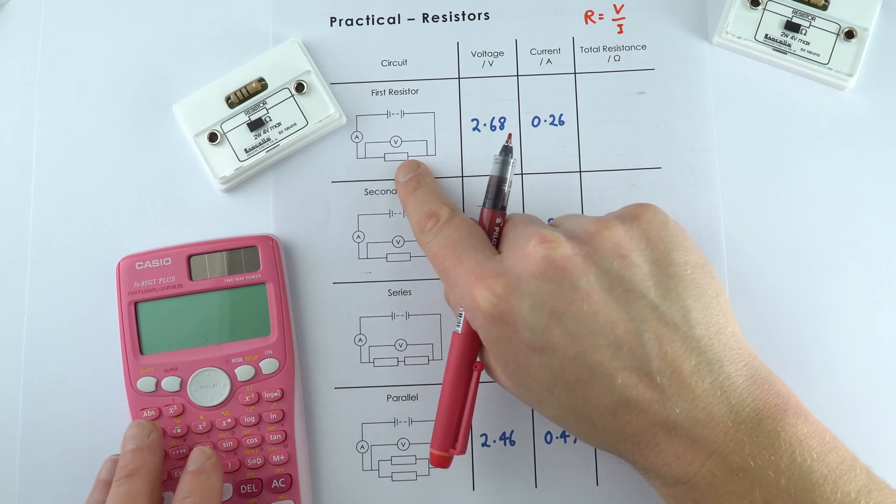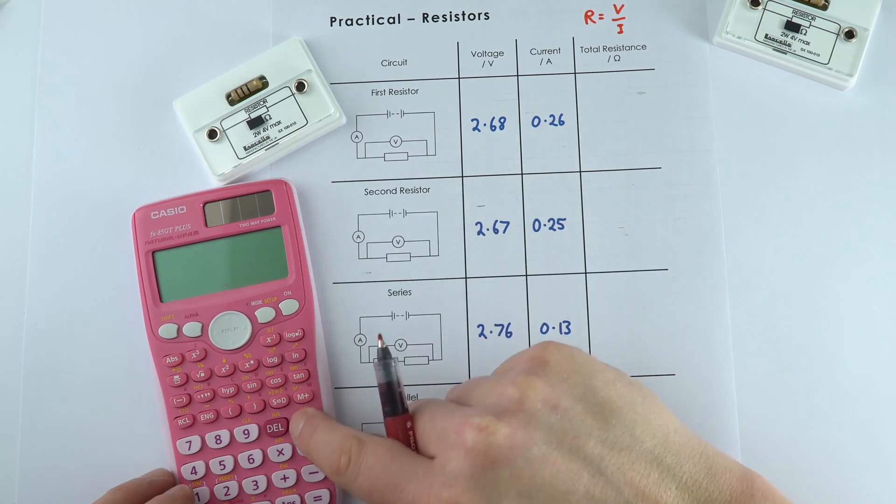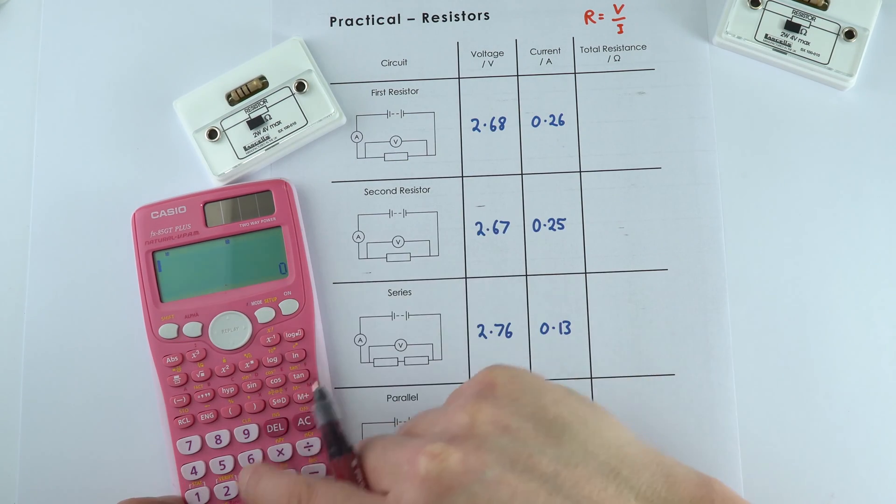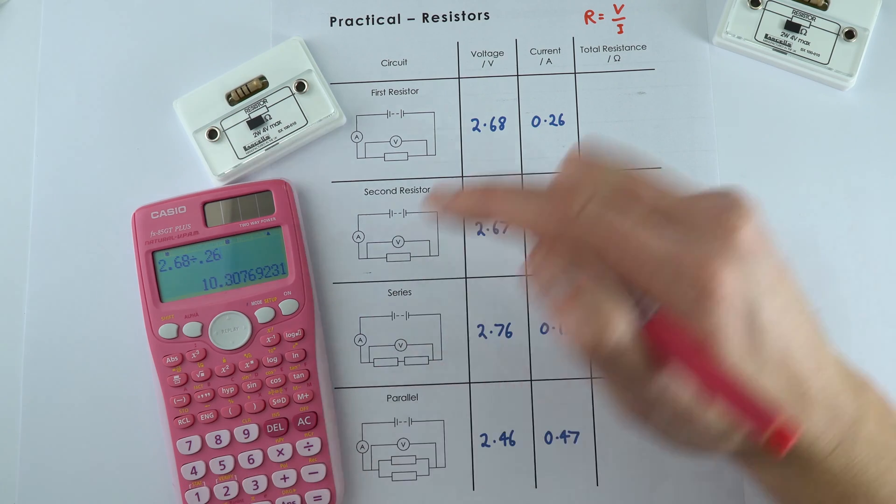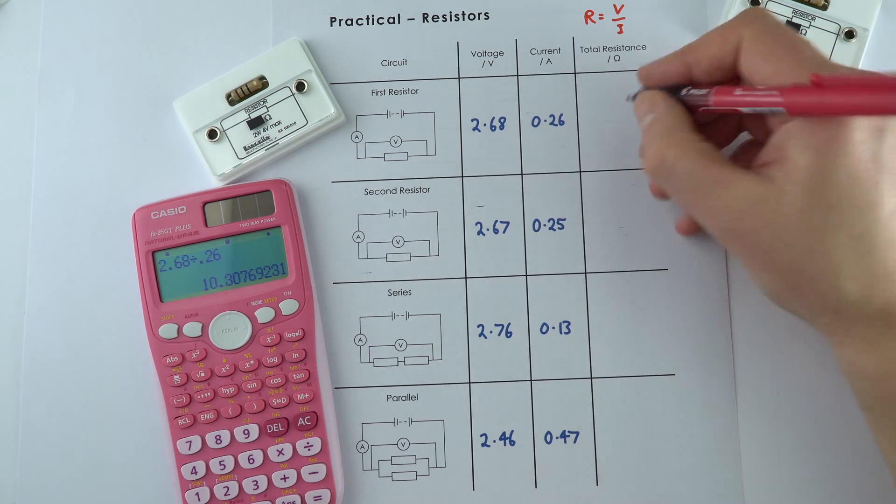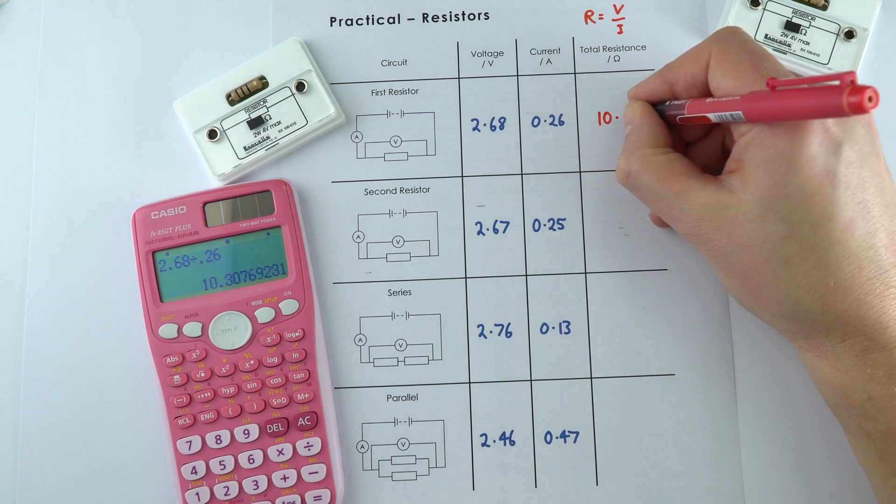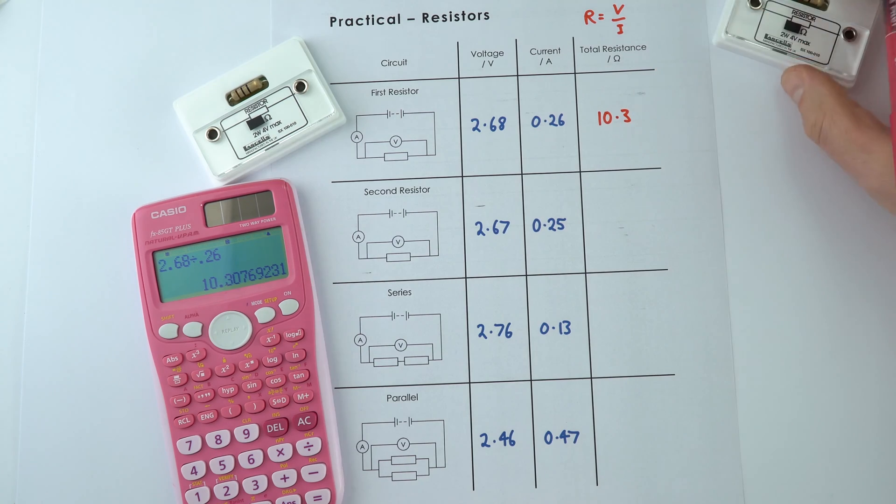So we can look at the total resistance of that first resistor just on its own by using this value here which is 2.68 dividing it by 0.26 to find that the resistance of this was equal to 10.3.